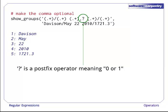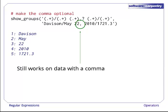Let's fix that by putting a question mark after the comma. In a regular expression, question mark is a postfix operator, meaning zero or one of whatever comes before it. The pattern before the question mark is optional. So now this pattern successfully matches data without a comma, and when we test it against data with a comma, it still works.